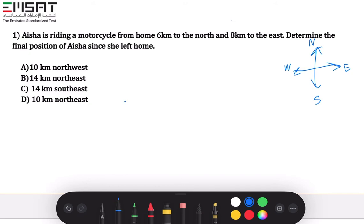Now let's say this is Aisha's home, and she went six kilometers north which is up, so six kilometers up, and then eight kilometers to the east which is to the right.